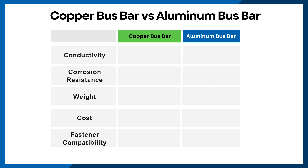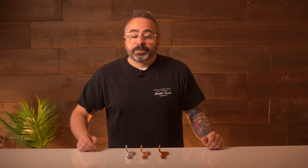We aim to examine five key factors that engineers typically consider when designing a bus bar, and these factors include conductivity, corrosion resistance, weight, cost, and fastener compatibility. So let's begin with conductivity.